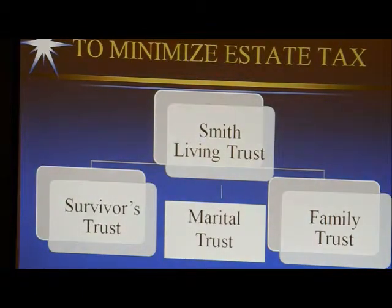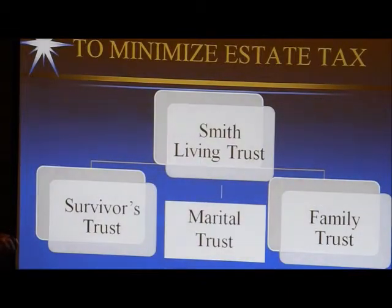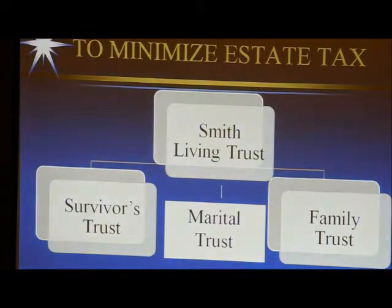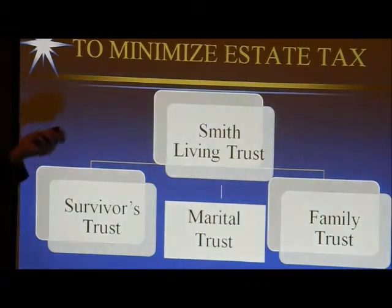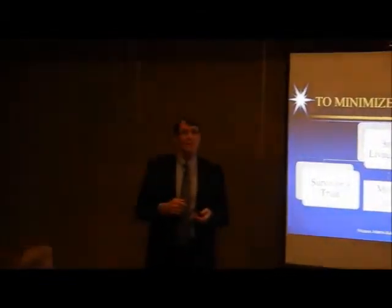Taxes. The easiest thing to do administratively is to say everything goes into the survivor's trust, because now the survivor still has a single trust still under their social security number — just like in the living trust, assets are linked to my and my wife's social security numbers. But when my living trust says to create these separate trusts and do the split, the marital trust and the family trust have to file their own income tax returns each year and get their own tax ID numbers.